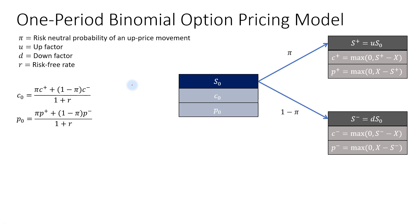In the one-period binomial option pricing model, one of the required components is the risk-neutral probability. That is denoted by pi. That is the risk-neutral probability of an up-price movement.